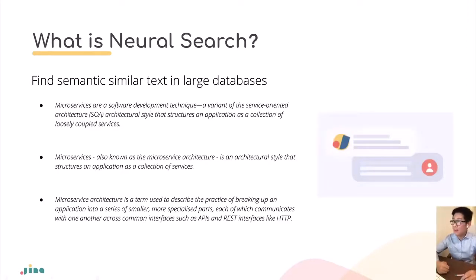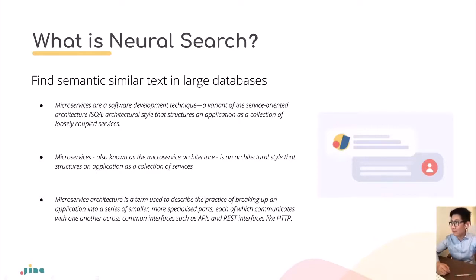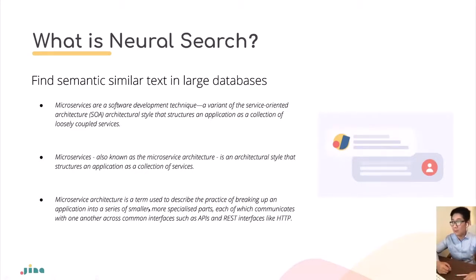So what is neural search? The motivation behind neural search is actually not very new. It starts from the motivation of finding similar text in a large database — finding semantically similar text. For example, here I list three definitions of microservice grabbed from Wikipedia, from computer magazines, and from tutorials. The idea is: given one paragraph of the definition of microservice, you want to find all similar definitions. Traditional search may not serve very well in this case because it is keyword-based, and you really need to understand the semantics to retrieve all possible definitions from the database.